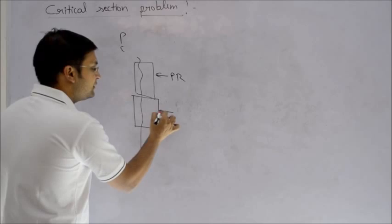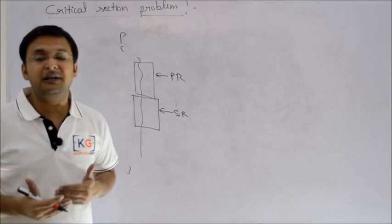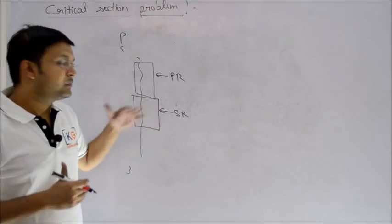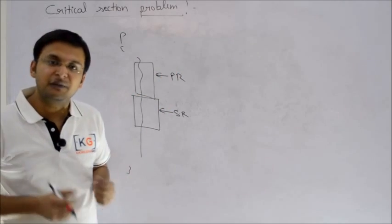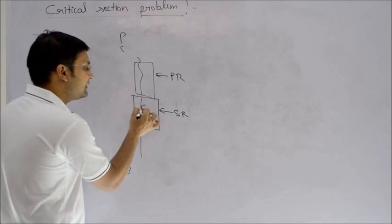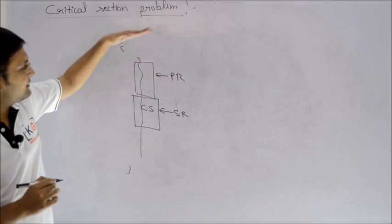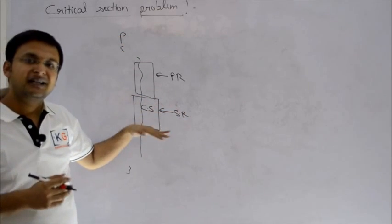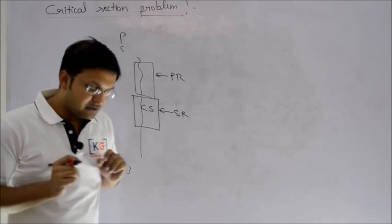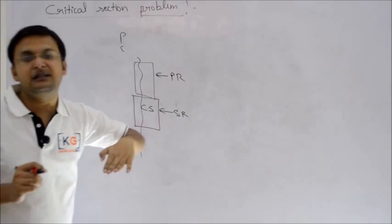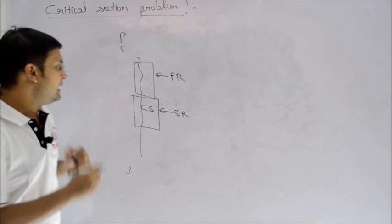When a process accesses shared resources that cannot operate in shareable mode, it means the resource must be used in mutual exclusive fashion, otherwise it may lead to inconsistency. I'll call this part of the segment as the critical section. What is critical about it is that I am accessing shared resources, so we need a proper mechanism.